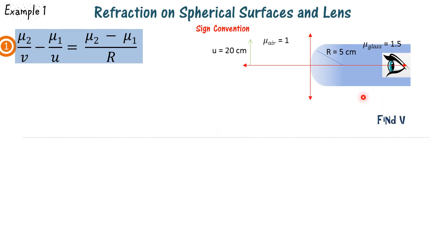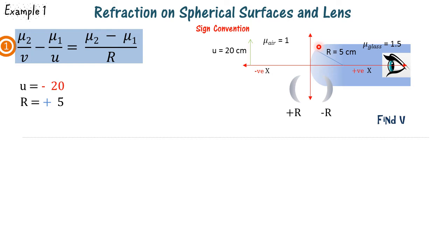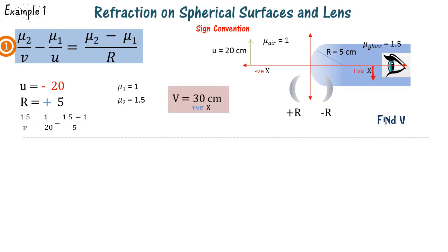In this first example, the object is placed on the negative x-axis, so u is minus 20. The spherical surface bulges away from the eye, so we take R as plus 5. The object is placed in air, so mu 1 equals 1, and the eye is in glass, so mu 2 is 1.5. On substituting the values, we get v equal to plus 30 centimeters, meaning the image is formed on the positive x-axis.